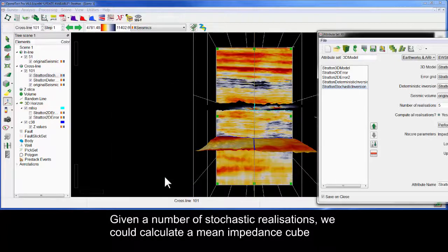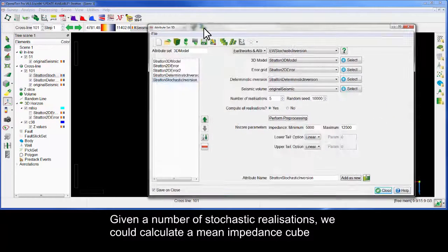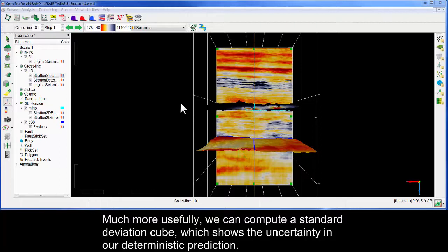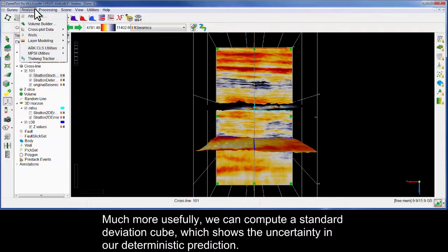Given a number of stochastic realizations, we could calculate a mean impedance cube, though this would simply approximate the deterministic inversion. Much more usefully, we can compute a standard deviation cube, which shows the uncertainty in our deterministic prediction.